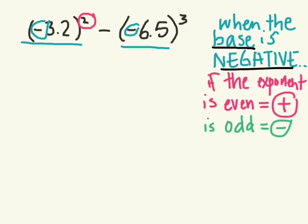And if the exponent is an odd number, for example 3, 6, 9, any odd number, your result will be negative when you simplify it. Okay, so let's go through this example.